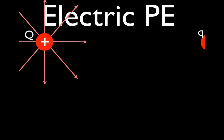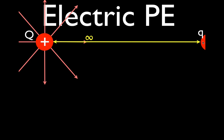This is the situation we have: we have two charges. This charge I'm calling capital Q — it's a positive charge, my main charge — and it's going to stay here and not move. This other charge is my little q charge, and it's also positive. It is so far away from the main charge that it is infinitely far away, so the distance between those charges is infinitely far.